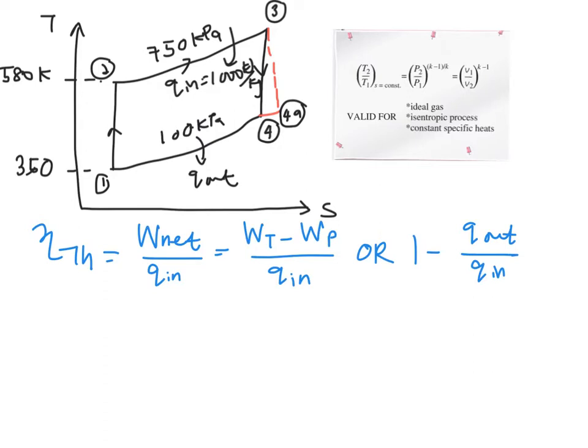So let's say if you want to solve it using this one first, you will need to look for your work of your turbine and the work of your pump. So the work of your turbine is actually between T3 minus your T4a, minus with the work of your pump, which is T2 minus your T1.